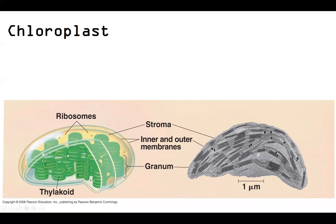We've got our granum stacks, our inner membrane, and our outer membrane. Also in the stroma — this internal area — we have ribosomes. Again, these are functionally identical to cytoplasmic ribosomes but a little bit distinct from the cytoplasmic ribosomes that plant cells have.